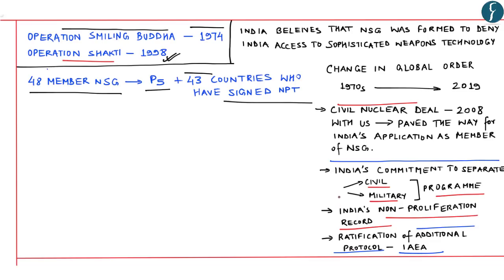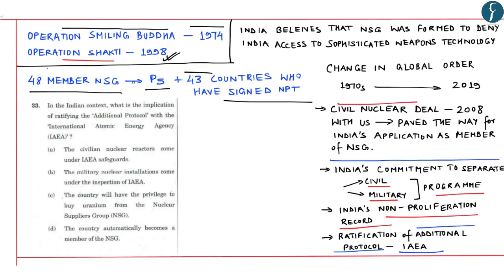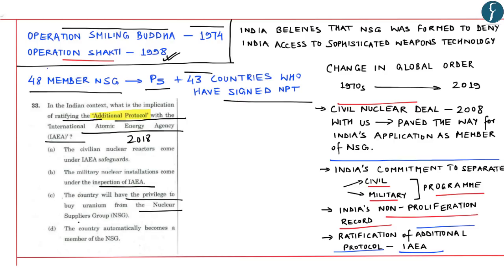The concept of the additional protocol becomes important because it was asked in the prelims of 2018. The question was: in the Indian context, what is the implication of ratifying the additional protocol with the International Atomic Energy Agency? The options were: civilian nuclear reactors come under IAEA safeguards; military nuclear installations come under inspection of IAEA; the country can buy uranium from NSG; or the country automatically becomes a member of NSG. The correct answer was A — the civilian nuclear reactors come under IAEA safeguards.